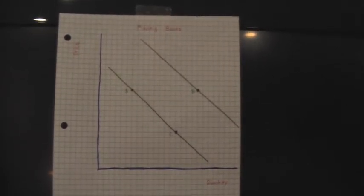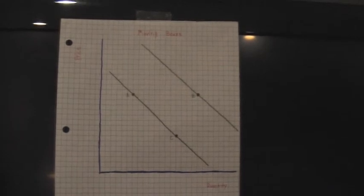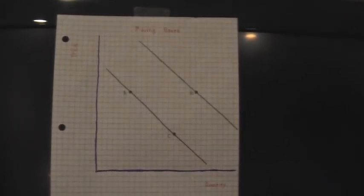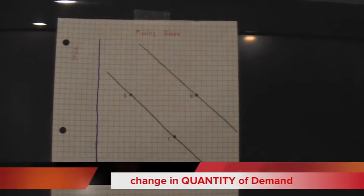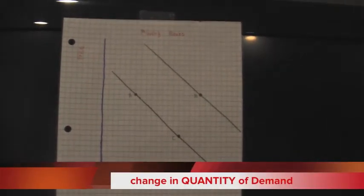Both points are on the same demand curve because the demand in packing material was only affected due to the price. This is an example in the change of quantity of demand.